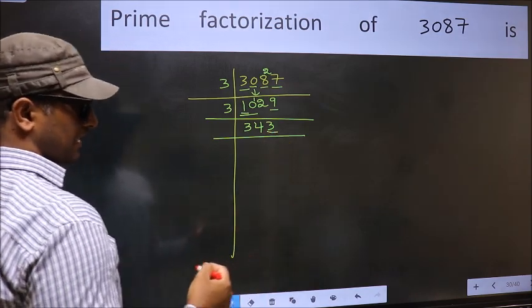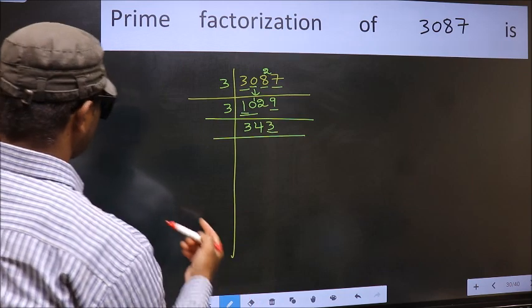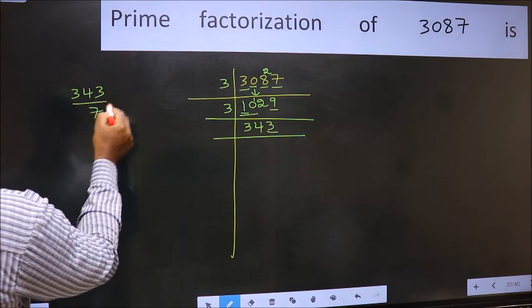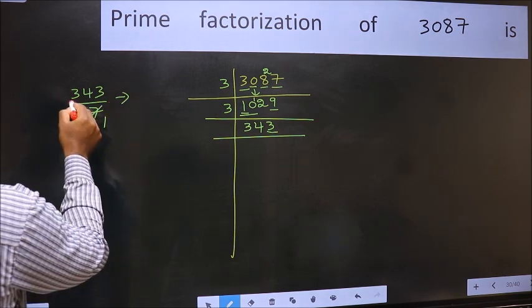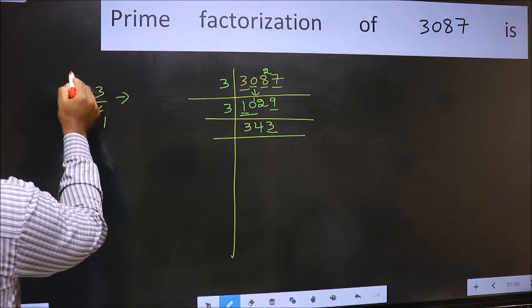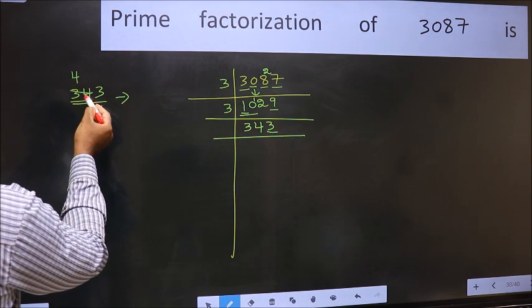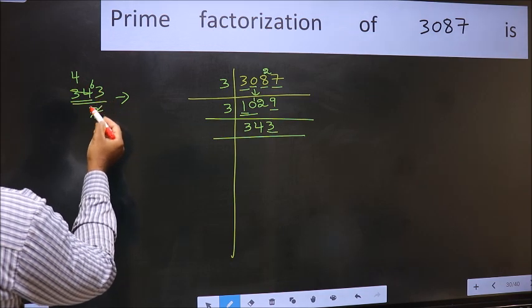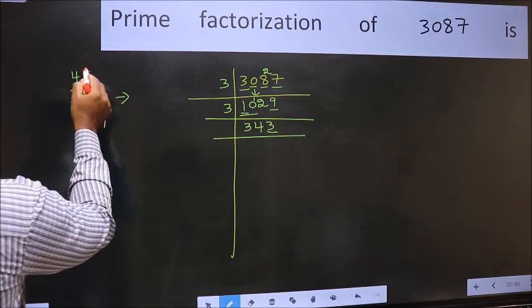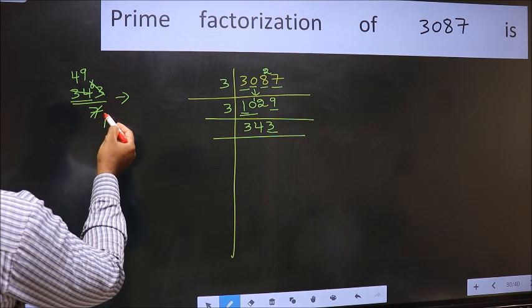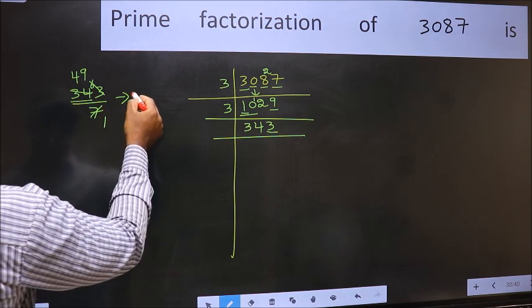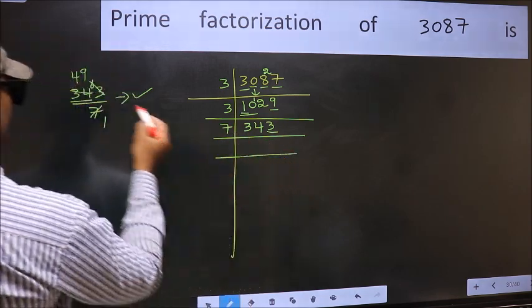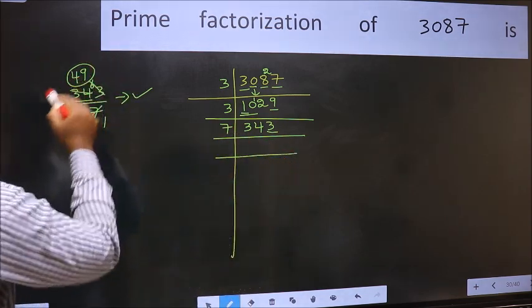Next prime number 7. Let us check divisibility by 7. A number close to 34 in the 7 times table is 28 — 7 fours are 28. 34 minus 28 is 6, carry forward — 63. 7 nines are 63. No number has been left out, so this is divisible by 7. So write 7 here, and the result is 49.